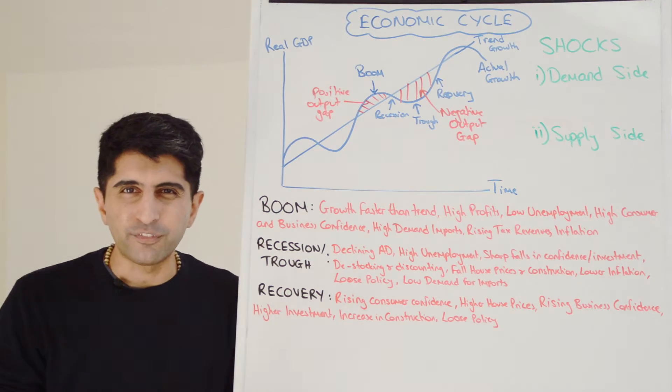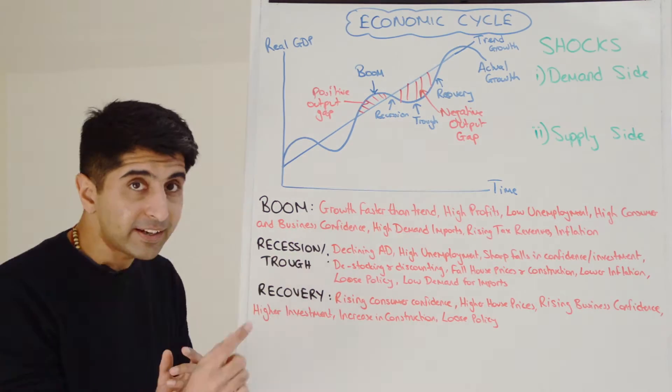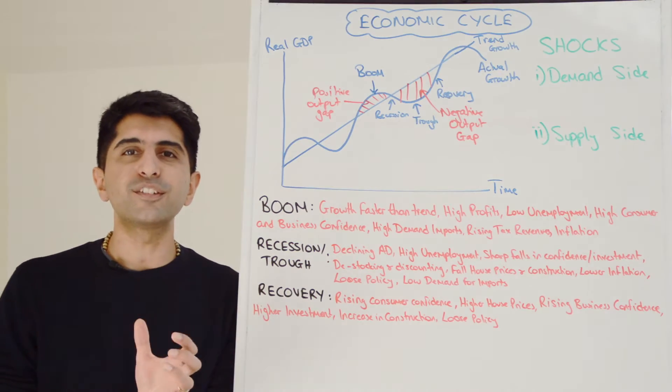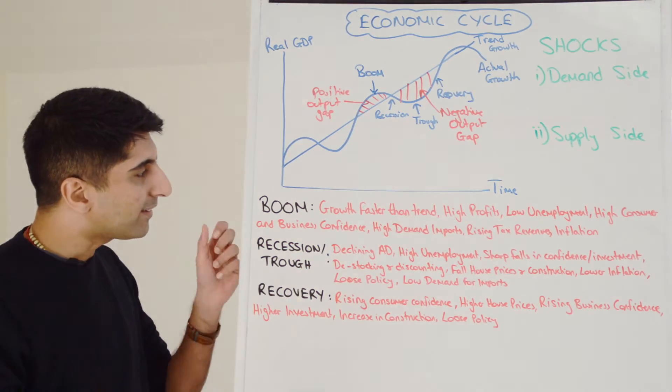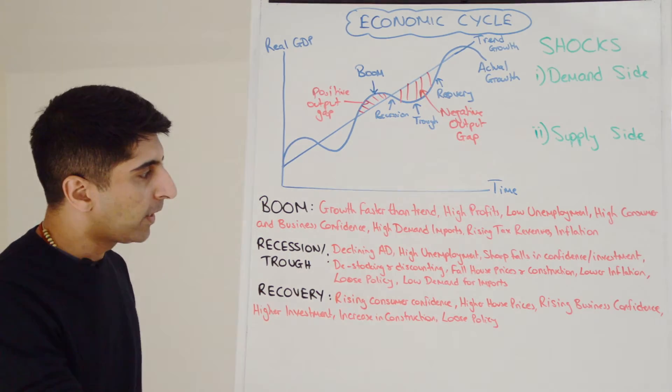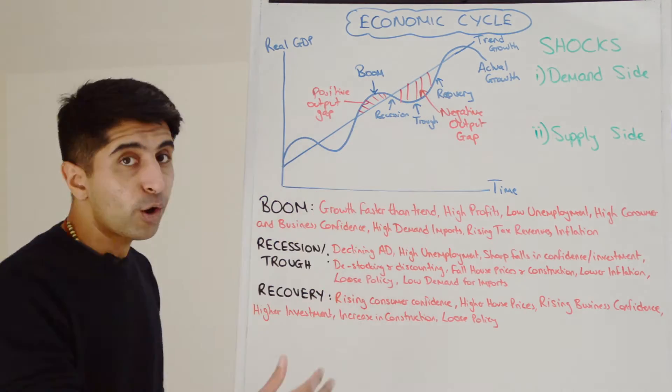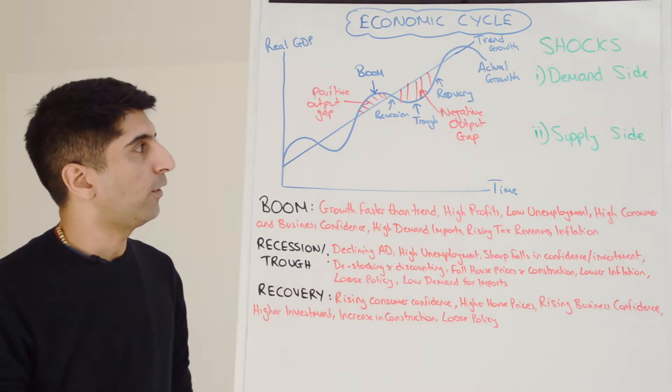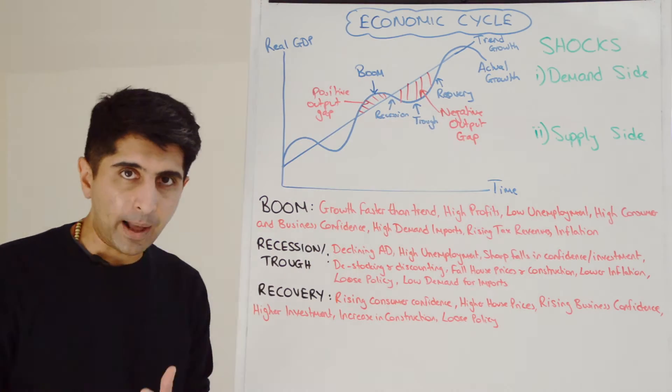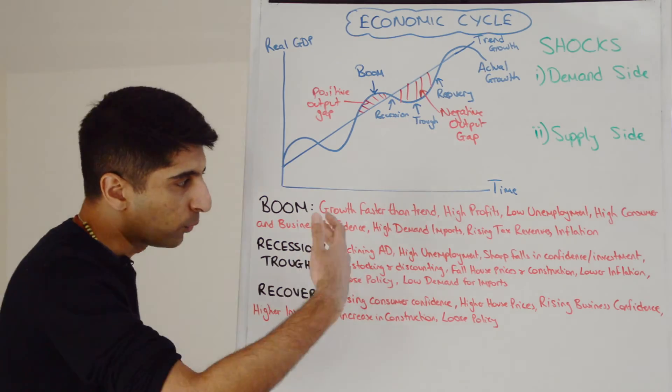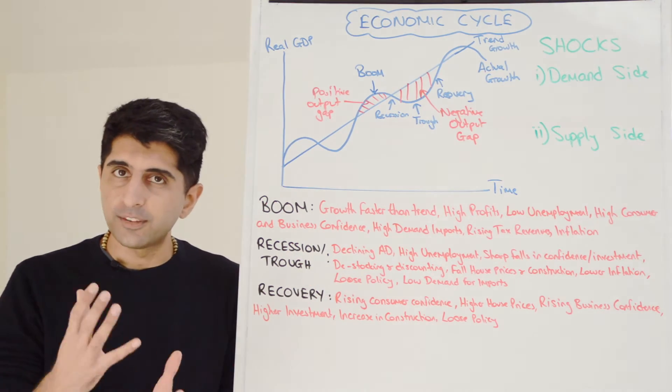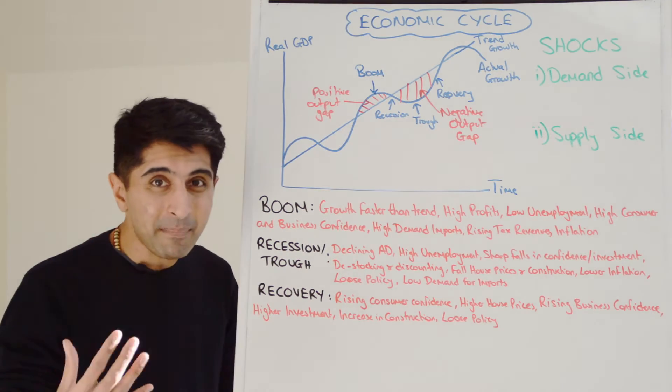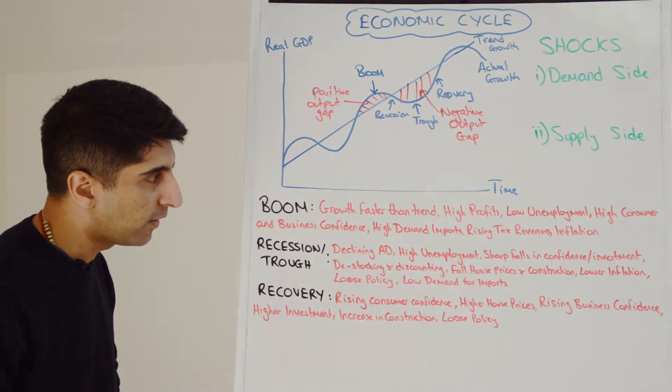In a recession and in a trough, the economy is doing really badly. Remember the definition of recession? Two successive quarters of negative growth. So if the economy is doing poorly, we're basically going to see the opposite of what we get in a boom. Declining AD, actual growth is going to be lower than potential growth. That's a negative output gap, as the diagram clearly shows. And with that, there is going to be higher unemployment. Firms getting rid of workers in order to maintain profit margins. Less demand for labor because there is less demand for goods and services generally.